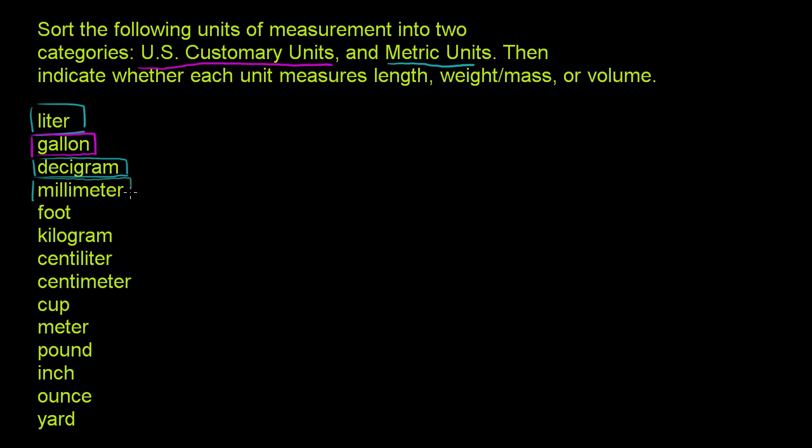Millimeter, this is metric system. The gram is metric system. Meter is metric system. The foot is a US customary unit. We'll talk about whether it's a distance or any of that in a little bit.